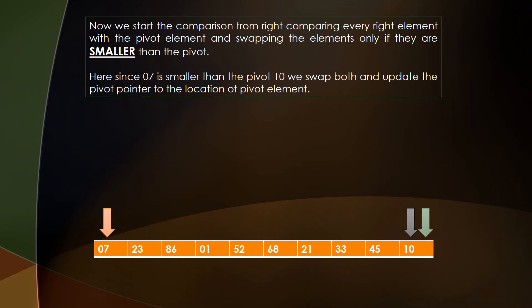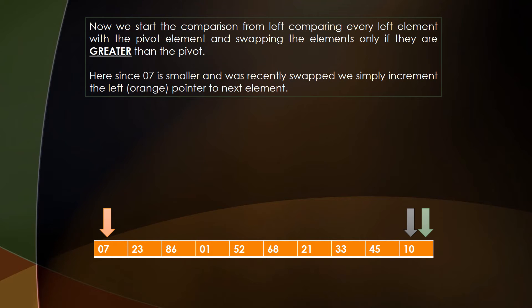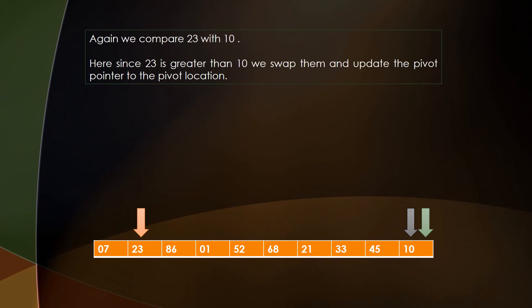We start a comparison from the right. We swap the positions of 7 and 10 and update the pivot pointer. Next, we compare every element from the left with 10 to find which element is greater than 10. We find 23, which is greater than 10, so we swap them and update the pivot pointer. The pivot pointer is updated and the locations of 10 and 23 are swapped.